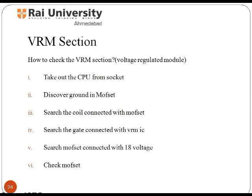The VRM section is called the voltage regulator module section, which senses the microprocessor voltage requirement to run. VRM enables it to run on either 5 volts or 12 volts for input power. To check this section, first take out the CPU from the socket. The identifier ground is the MOSFET. Search for the coil connected with the MOSFET and the gate connected with the VRM IC. Then find the MOSFET connected with 18 volts and perform a checking operation on it.